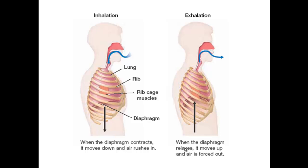When you breathe out, the ribcage comes back down, the diaphragm relaxes, and you end up with a smaller lung volume. An interesting thing about inhaling is that you might think you're sucking air in, but you're not. What you're doing is contracting certain muscles, which allows your lung volume to increase. When lung volume increases, the pressure inside drops, and the air outside just flows in from an area of high pressure to low pressure. You're not sucking the air in — you're just changing the volume of your lungs and the air rushes in automatically.